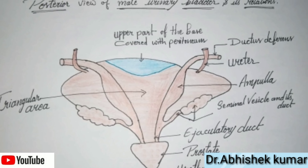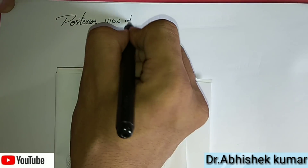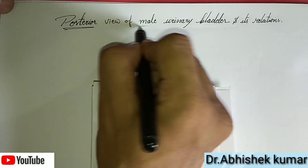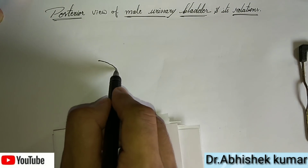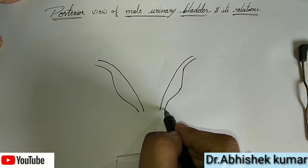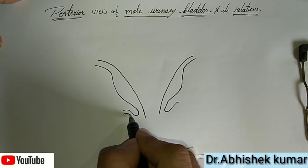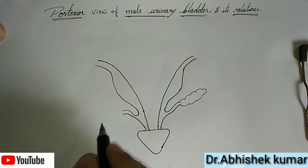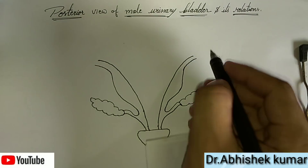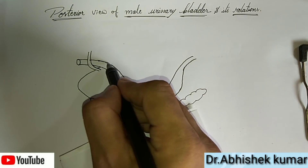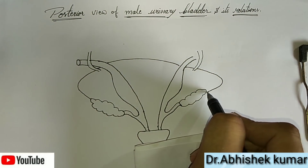Now we come to the posterior view of the male urinary bladder and its relation to the genital ducts and glands. We will see all the structures related to the posterior view of the male urinary bladder, including the peritoneum, ductus deferens, ampulla, and everything else. We are drawing the various structures present on the posterior view of the male urinary bladder — the peritoneum, seminal vesicle and its duct, and the ureter.